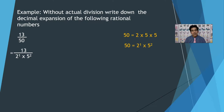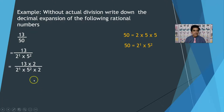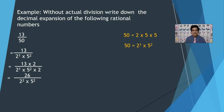Multiply both numerator and denominator by 2 (since the fraction value does not change when multiplied by a non-zero value). So we get 13 times 2 over 2 power 1 times 5 squared times 2, which gives 26 over 2 squared times 5 squared. Since 2 squared into 5 squared equals 100, we have 26 by 100, which gives the decimal expansion 0.26.